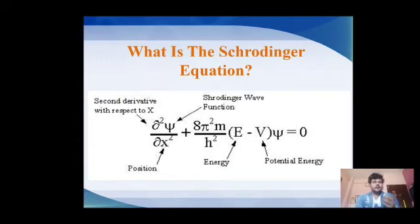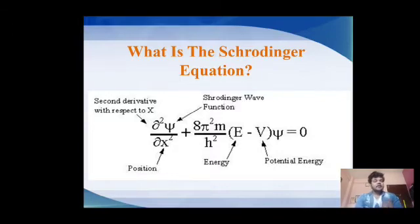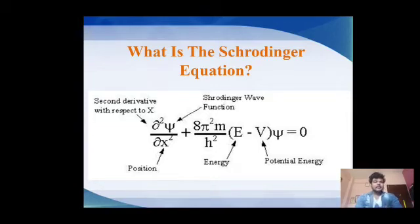The Schrödinger equation consists of: d²ψ/dx² + (8π²m / h²)(E − V) = 0. Here, x is the position of a particle, h is Planck's constant, m is mass, E is the total energy, V is the potential energy, and ψ is the wave function.